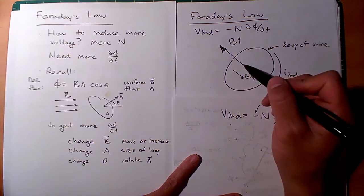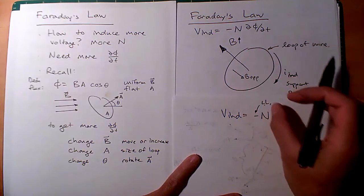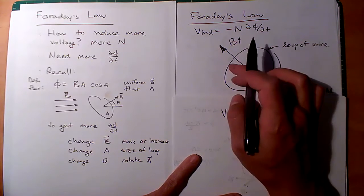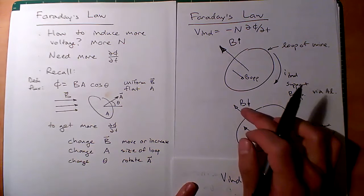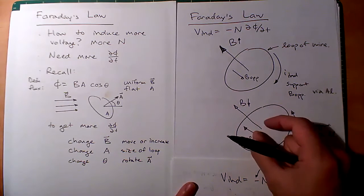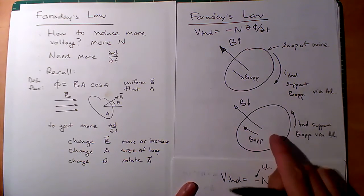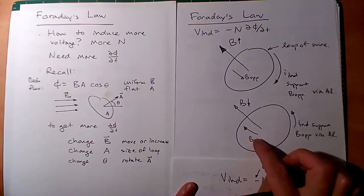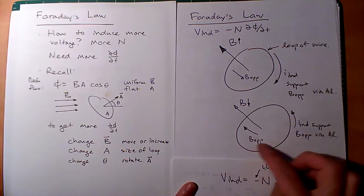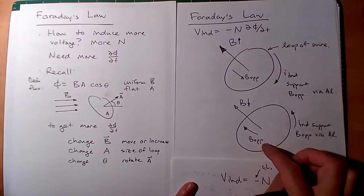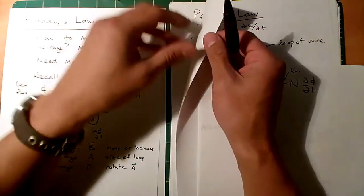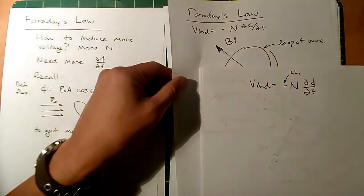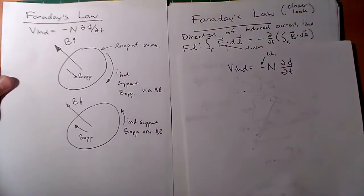If you take that same magnet and move it away, that B decreases, the B-opposed flips, and the I induced flips. If B is actually getting smaller, it says 'don't leave' — it sets up a B-opposed to fight that decrease. Now let's take a little bit of a deep dive into the formal equation of Faraday's Law.